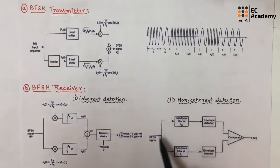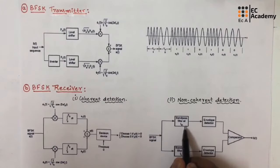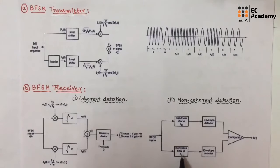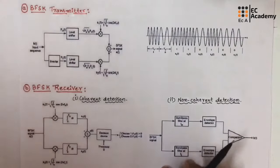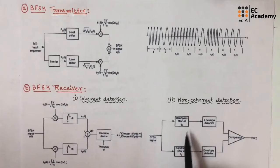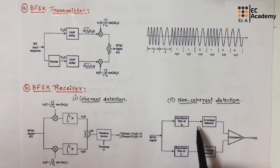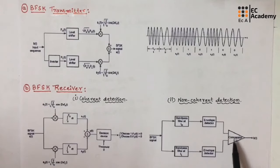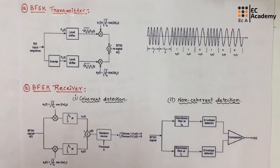In non-coherent detection, there are no local carriers at the receiver end. The non-coherent BFSK receiver consists of two bandpass filters — one with center frequency FH and another with center frequency FL. Since FH − FL = 2FB, the outputs of the filters do not overlap. The bandpass filters pass their corresponding main lobes without much distortion. The output of each filter is applied to envelope detectors, and their outputs are compared by a unipolar comparator to produce the output bit sequence B(t). This concludes our discussion of BFSK modulation, including its introduction, generation, and both coherent and non-coherent reception.